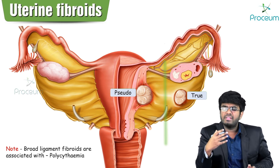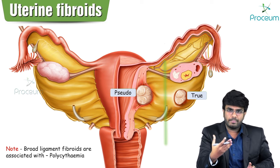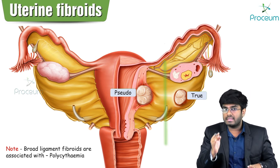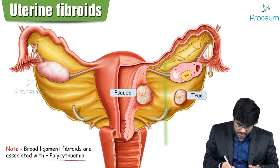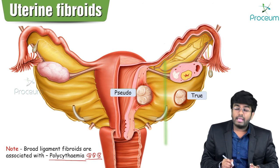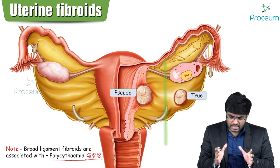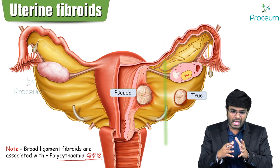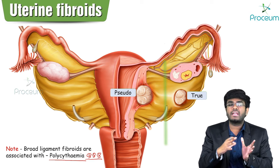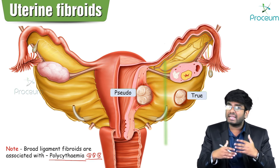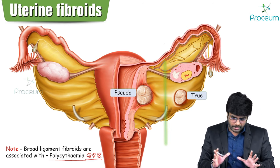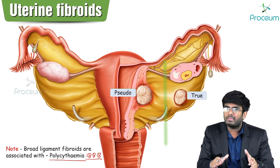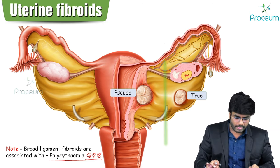A female with fibroid usually has anemia, but broad ligament fibroids are associated with polycythemia. This is because broad ligament fibroids compress the ureters, causing hydronephrosis, which leads to increased erythropoietin levels, causing polycythemia. Other fibroids are associated with anemia and fatigue. This is an important MCQ point.